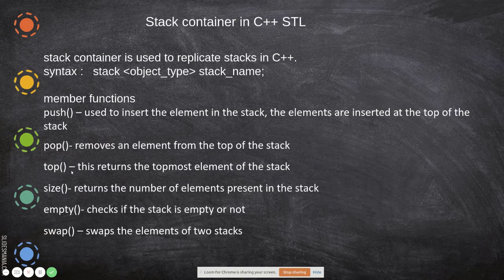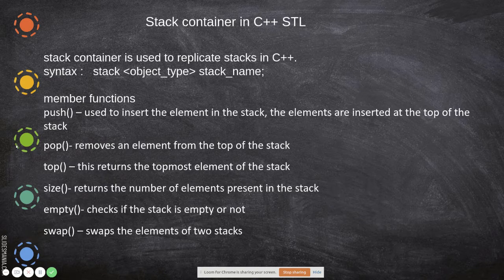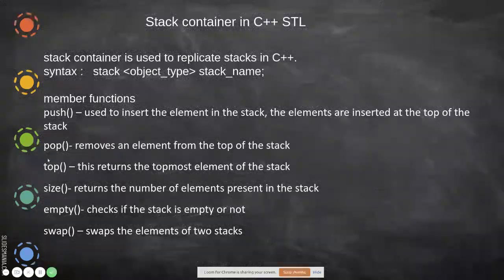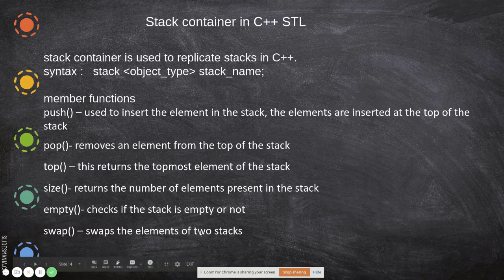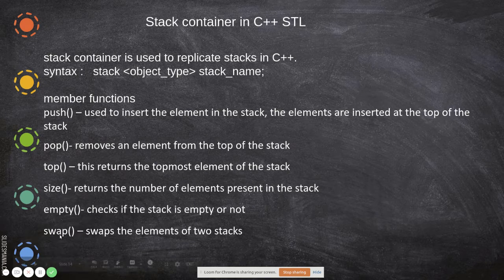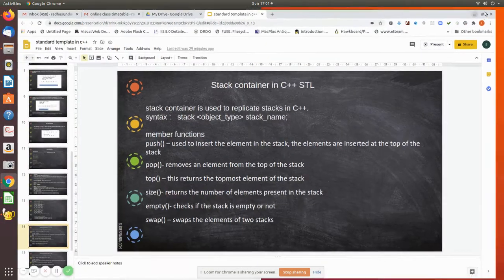Size returns the number of elements in the stack at any point in time. Empty is used to check if the stack is empty or not — before popping, you must confirm there are values in the stack. Swap, when there are two stacks of the same type and same number of elements, will swap their contents.